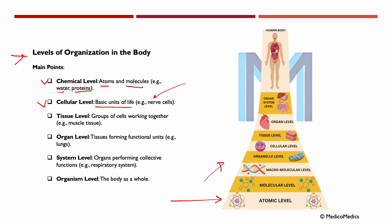After that, we reach the tissue level — groups of cells working together, like muscle tissue. Continuing from that, we get to the organ level, where tissues form functional units, for example, the lungs. Then we get to the system level, where organs perform collective functions, for example, the respiratory system. And finally, we get to the organism level — the body as a whole.